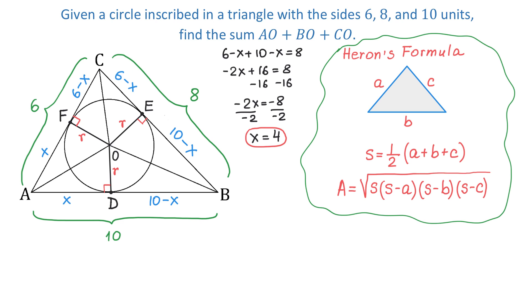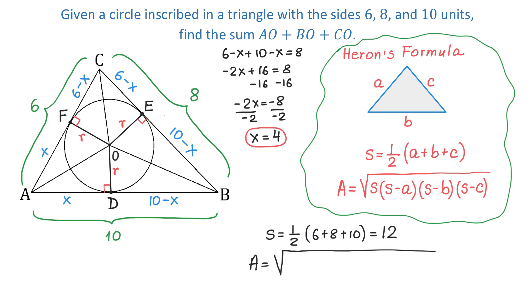Let's find number S for triangle ABC. S equals one half times the quantity 6 plus 8 plus 10. Then 6 plus 8 plus 10 makes 24, and 24 divided by 2 makes 12. Once we have this number, the area equals the square root of 12 times (12 minus 6) times (12 minus 8) times (12 minus 10). The whole expression inside the square root equals 576, and the square root of 576 is 24.